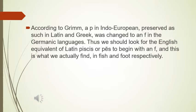According to Grimm's Law, a 'P' in Indo-European, preserved as such in Latin and Greek, was changed to an 'F' in the Germanic languages. For example, the Latin words for 'fish' and 'food' beginning with 'P' changed to the letter 'F,' and this is what we actually find — 'fish' and 'food' respectively.